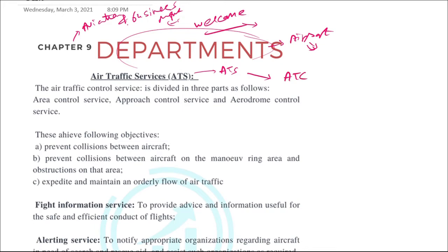Air traffic control, which is ATC, is a part of the air traffic services. ATC will be providing the ATS services — that is the job role and responsibility of ATC. The air traffic control service is actually divided into three parts.